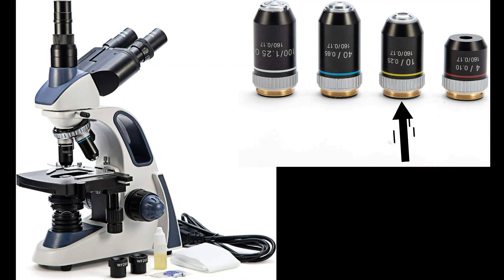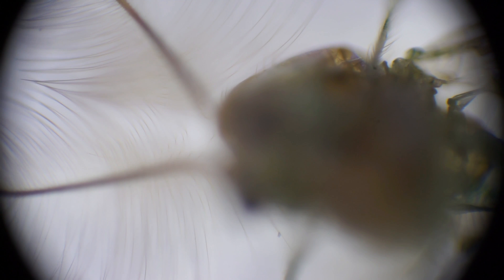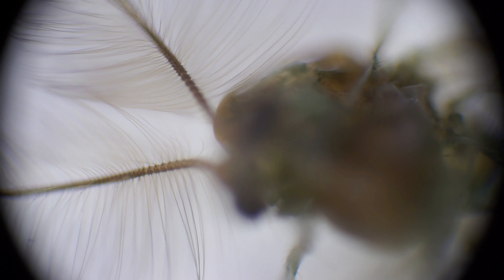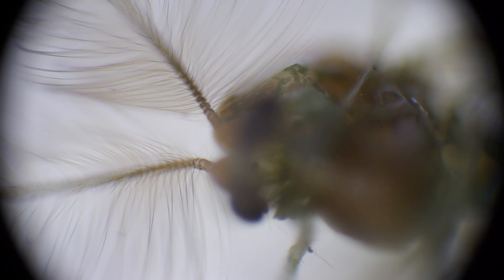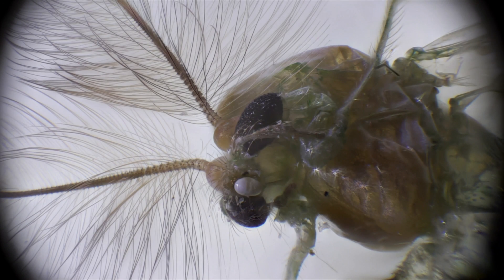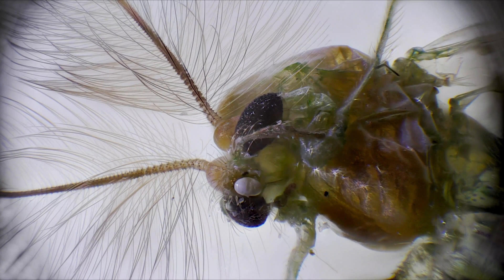Now let's continue to zoom even more. We move to the next ocular and do the same process — a short video clip focusing through the whole depth of field. As you can see, we are zooming in on only the head of the insect. Here we can see its eyes and the feathers it has on top of the head, and this one might be the nose — I'm not sure. After stacking all these frames, here is the result. I like this result. I removed the dark corners and added color, contrast, and a little more sharpness in GIMP.